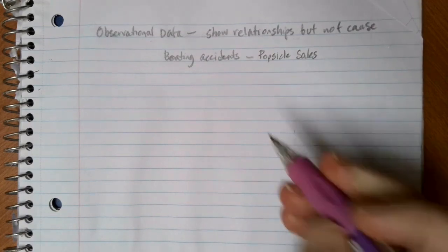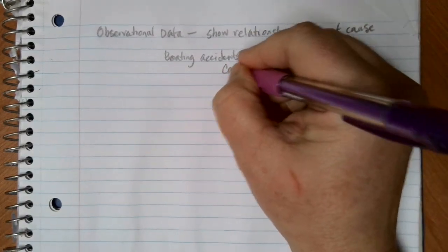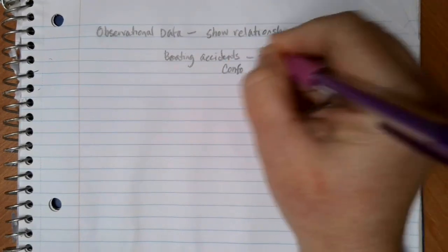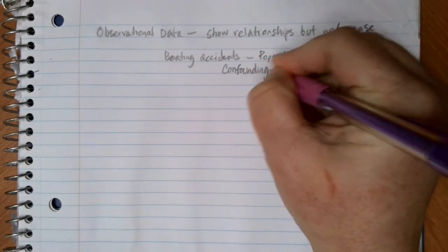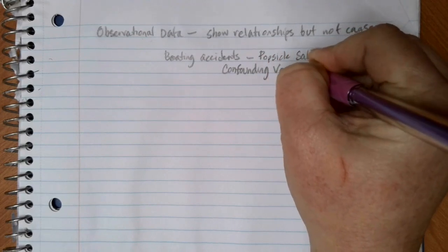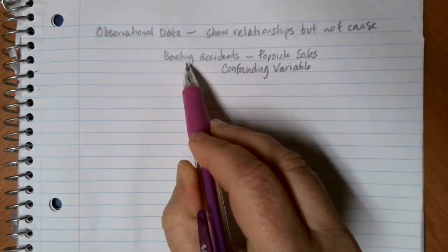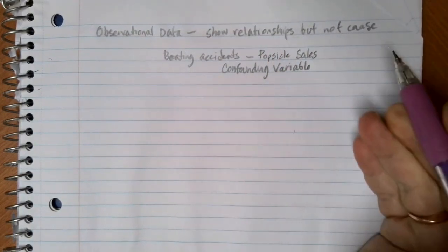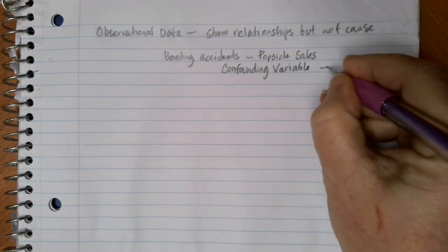And that seems kind of silly. What we have here is an example, even though both of these are related, we have what's called a confounding variable in the background. In this case, boating accidents and popsicle sales go up at the same time because it's summer.